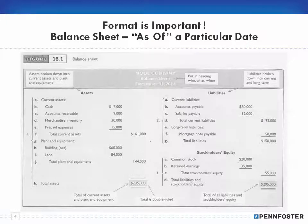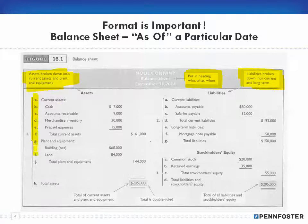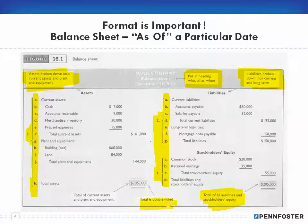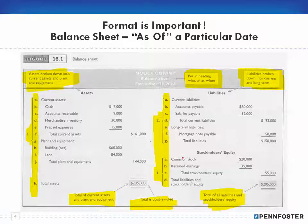When a financial statement is produced, you won't see the notes or the ABC references down the side — those are just textbook references to help you follow along with what's being presented on the balance sheet and income statement. If you imagine not seeing what I've highlighted in yellow, this is what your balance sheet actually looks like.